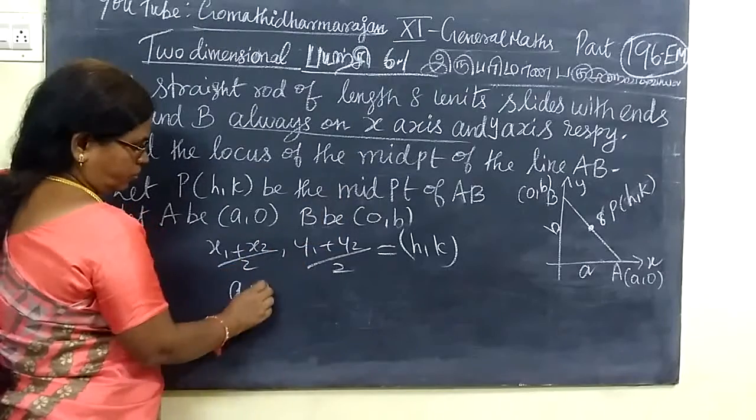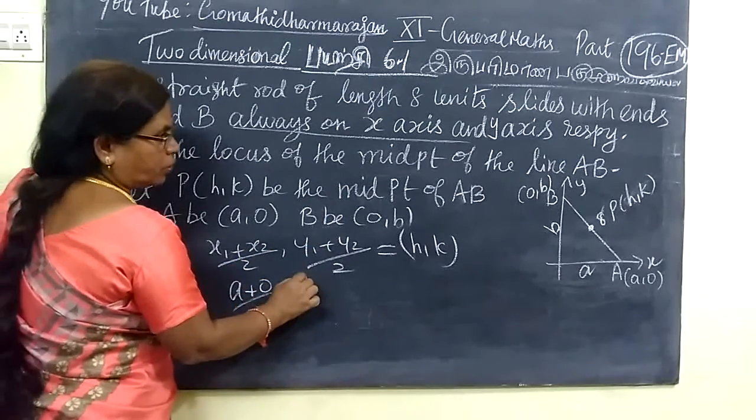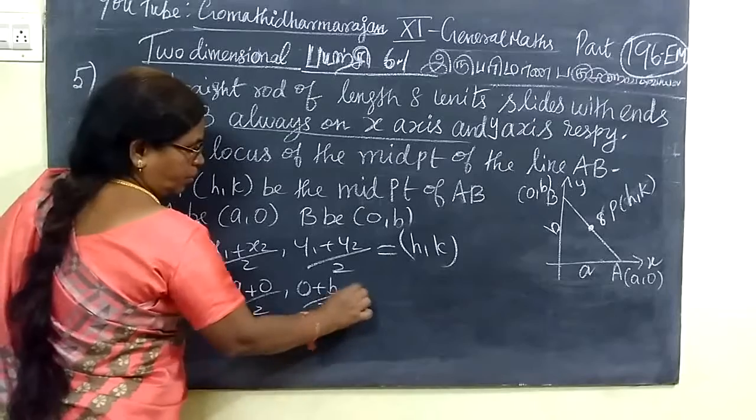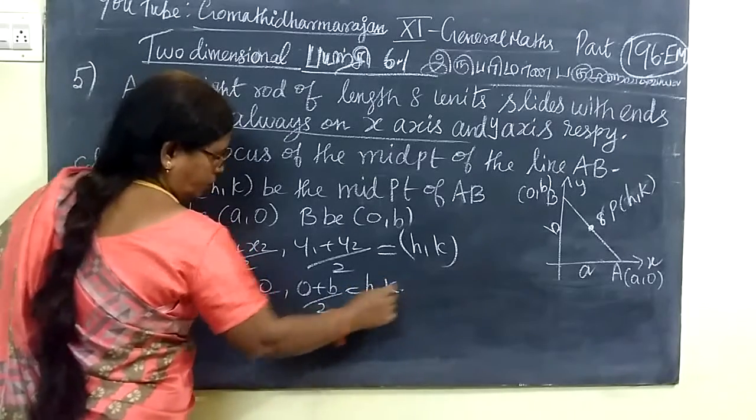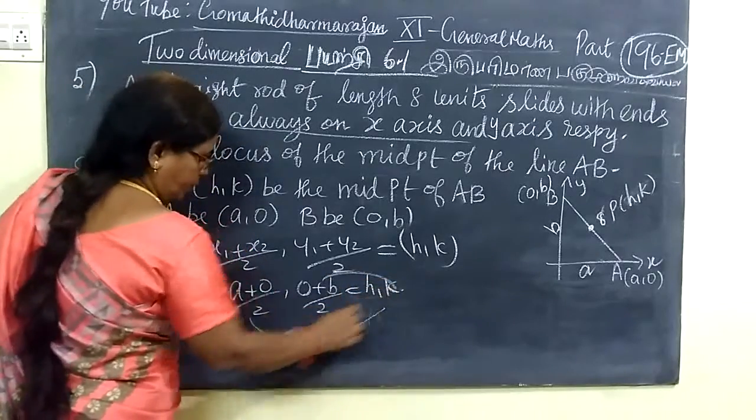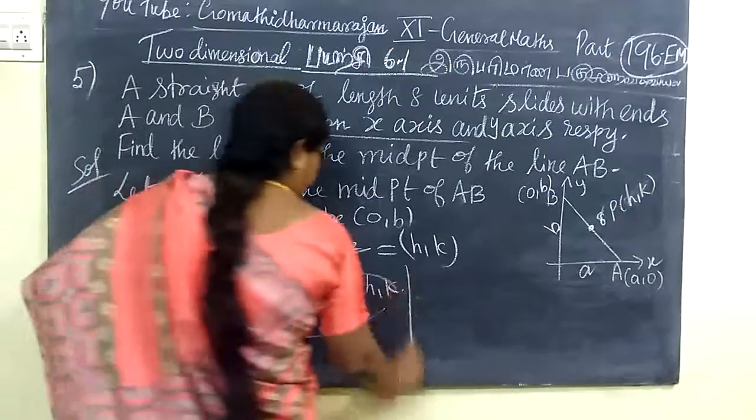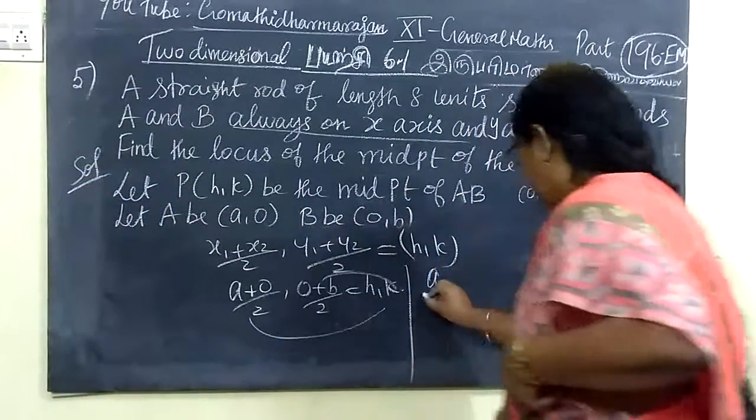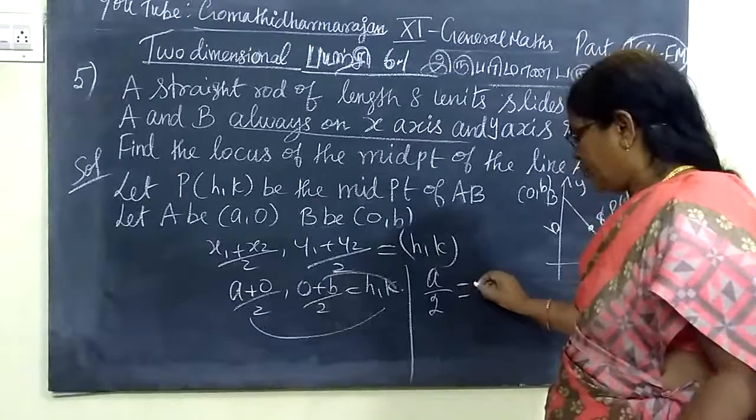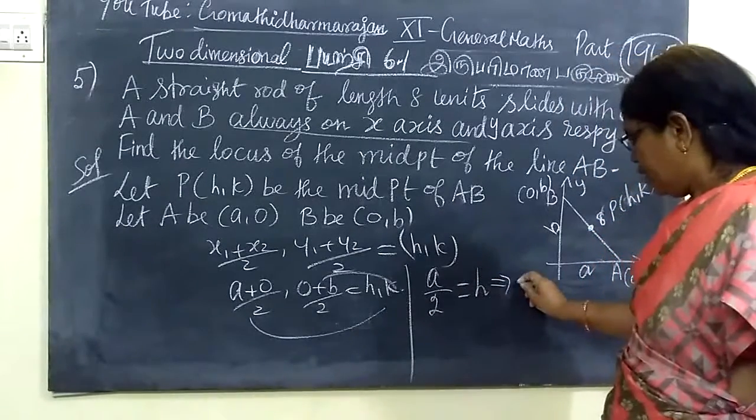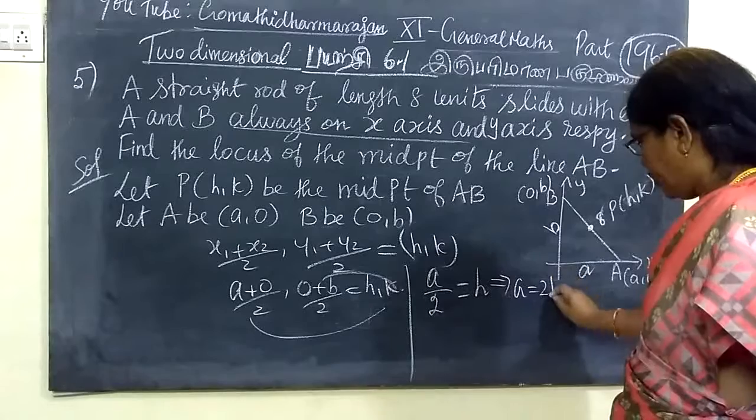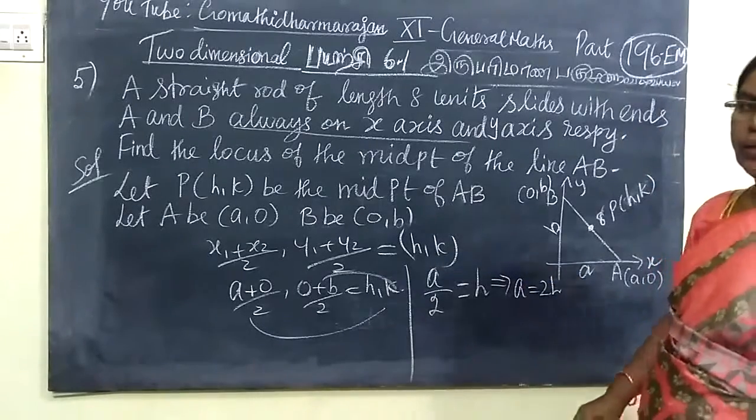So the answer is a/2 equals x, which implies a equals 2x. Similarly, b/2 equals k, so b equals 2k. Next, we express both in terms of x and k.